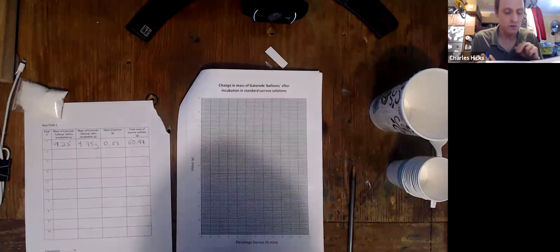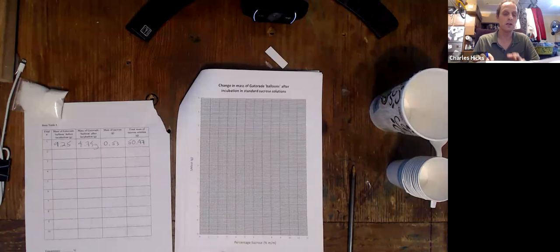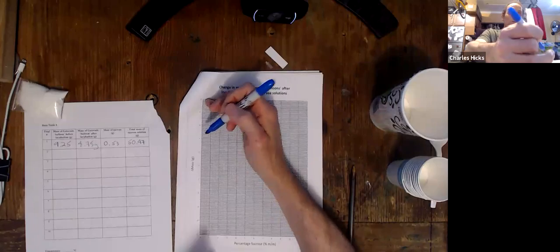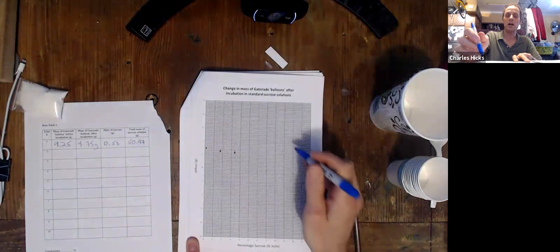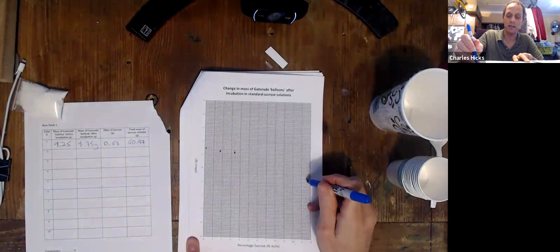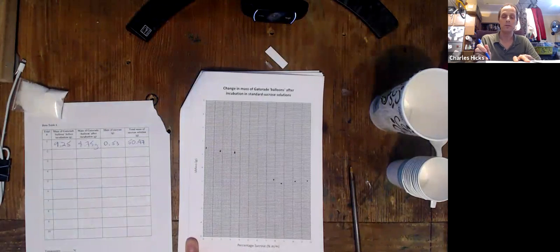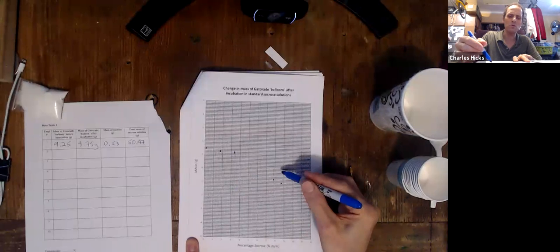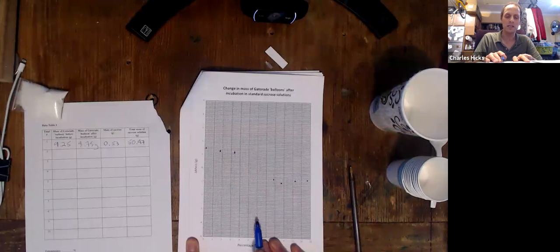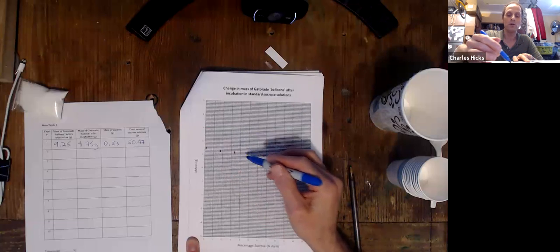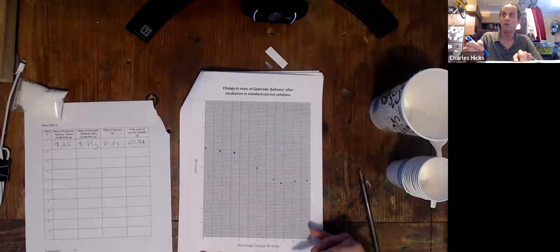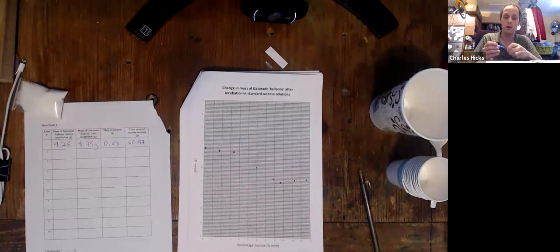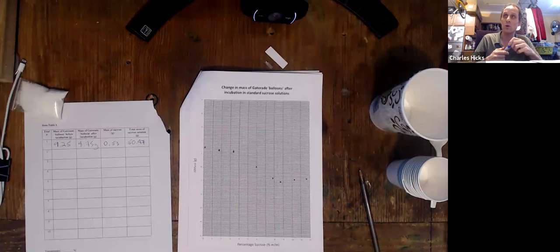It's most likely that what you'll see is the solutions at somewhere in the lower percentages will have tended to gain mass. So you might see some dots on the page that might look something like that. And somewhere towards the higher end, you certainly will see ones that will have lost mass. Maybe a little bit of random error in there. And somewhere in between, we want to determine what is the percentage at which this graph looks like it crosses zero grams lost. Whatever percentage that is, is the percentage that corresponds to an isotonic solution that is isotonic with the Gatorade.